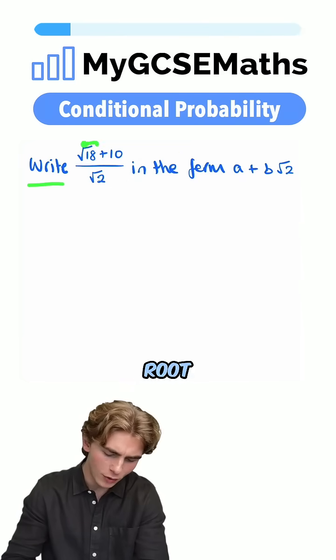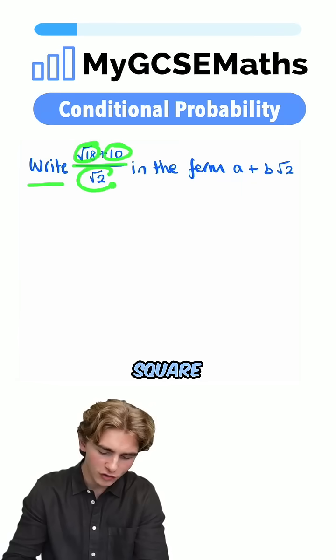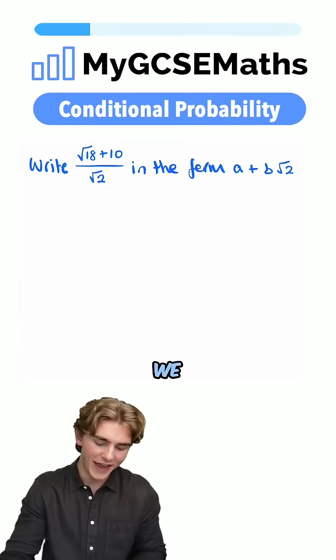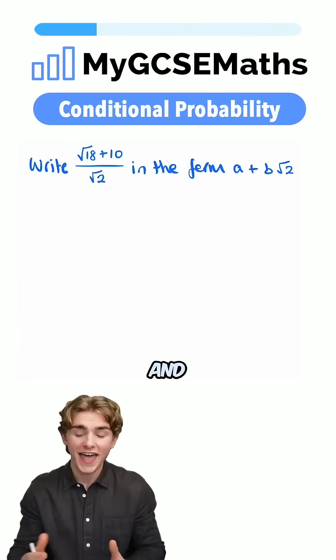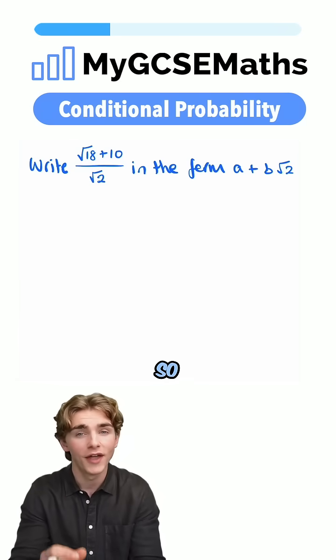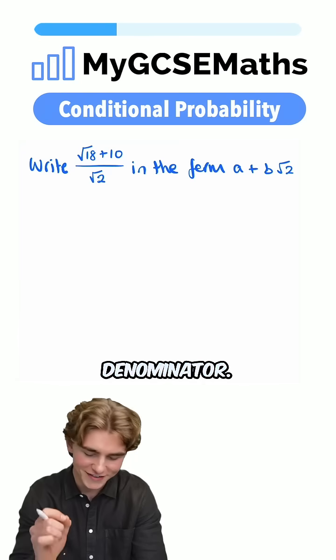This question says, write the square root of 18 plus 10 over the square root of 2 in the form a plus b root 2. Now, we can see that we have a root on the bottom of a fraction, and over here we don't have any roots on the bottom of a fraction, so we're going to need to rationalize the denominator.